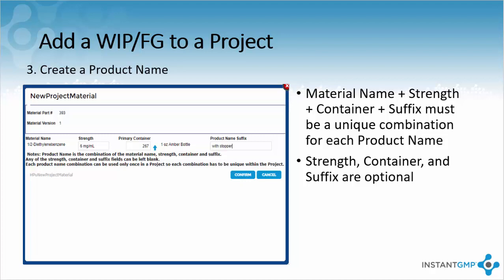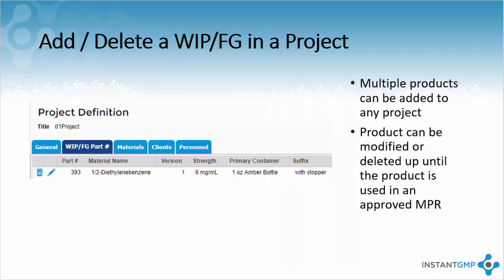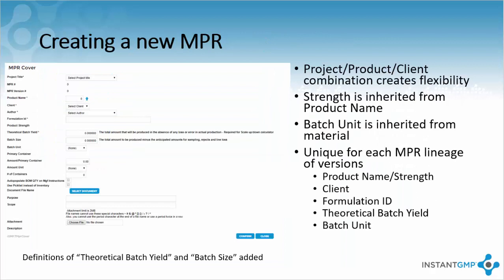An NPR outlines the general process that will be followed by manufacturing personnel consistently. You create batch production records, or BPRs, from the NPR to ensure consistency is maintained batch to batch. Creating an NPR begins with selecting the project this NPR will be associated with, selecting the final good produced by this NPR, the client of this product, and who from your site will author the NPR. This triple identifier allows for a high level of flexibility while allowing for a unique combination that is easily searchable within the software.